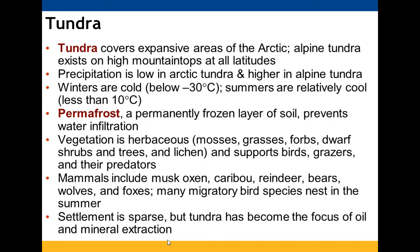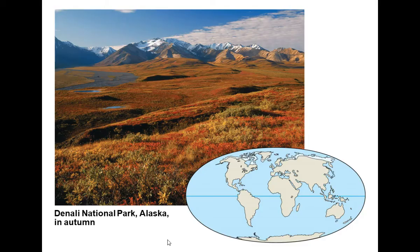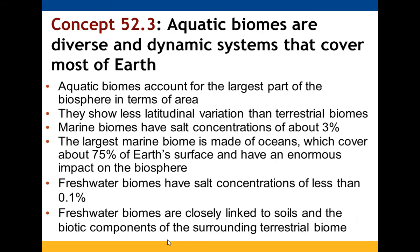Tundra covers expansive areas of the Arctic; alpine tundra exists on high mountaintops at all latitudes. Arctic tundra has low precipitation; alpine tundra has higher. Both have cold winters and cool summers. Permafrost — a permanently frozen layer of soil — prevents water absorption and is disappearing in Alaska. Vegetation includes mosses, grasses, forbs, shrubs, trees, and lichens, supporting grazing birds and mammals including musk oxen, caribou, reindeer, bears, wolves, and foxes, and migratory birds that nest there in summer. It is sparsely settled but is a focus of oil and mineral extraction.